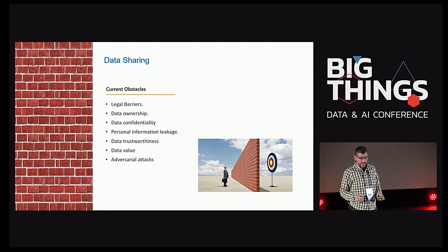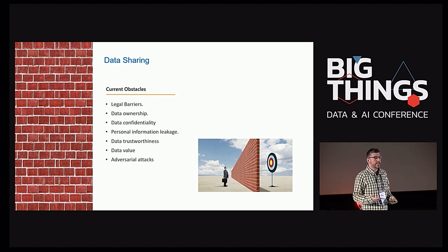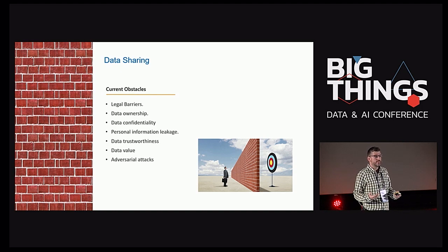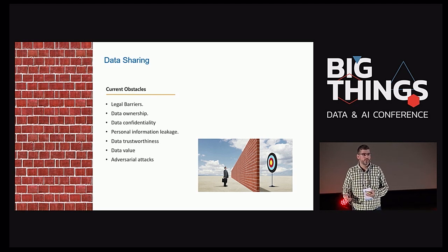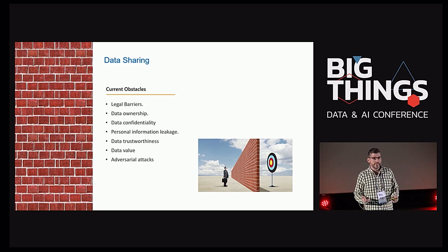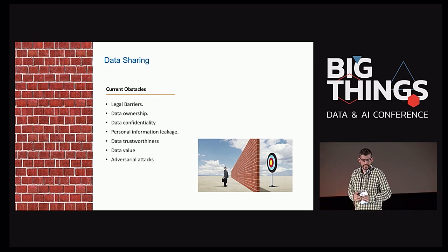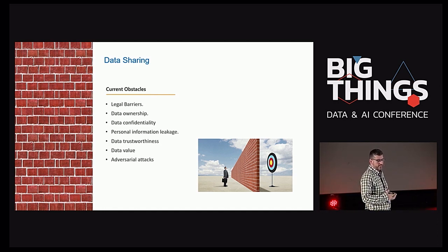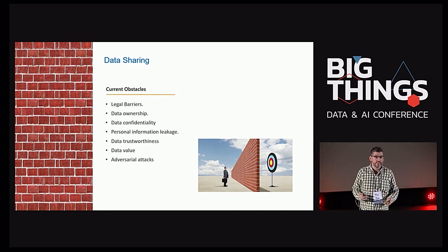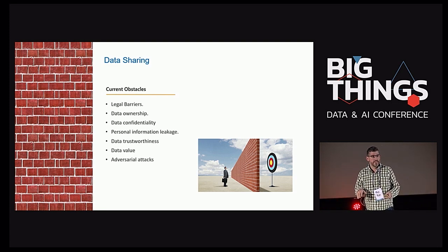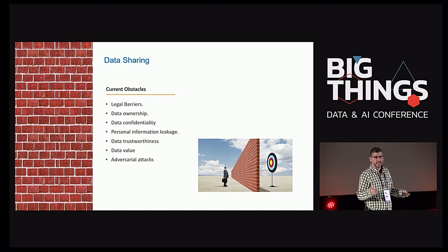We also have data confidentiality. In the example of the robotic arm, if many companies give me data from their robotic arms, this can reveal industrial secrets — I would know how many cars they produce of every model at every time, which is a concern in many industries. We also have personal information leakage. Personal information can produce very high personal damage. Imagine that medical records are suddenly open and everybody knows about a sexually transmitted infection.